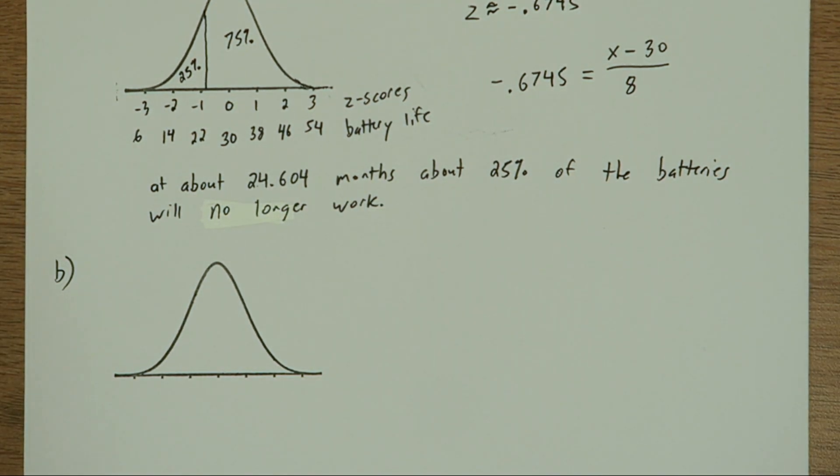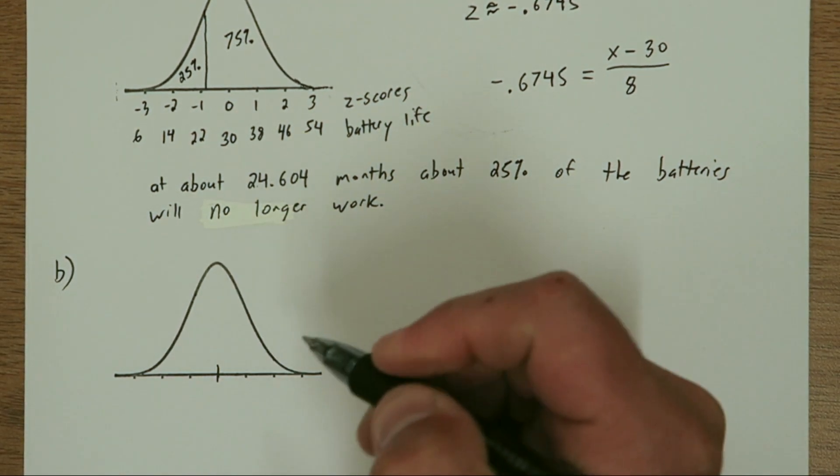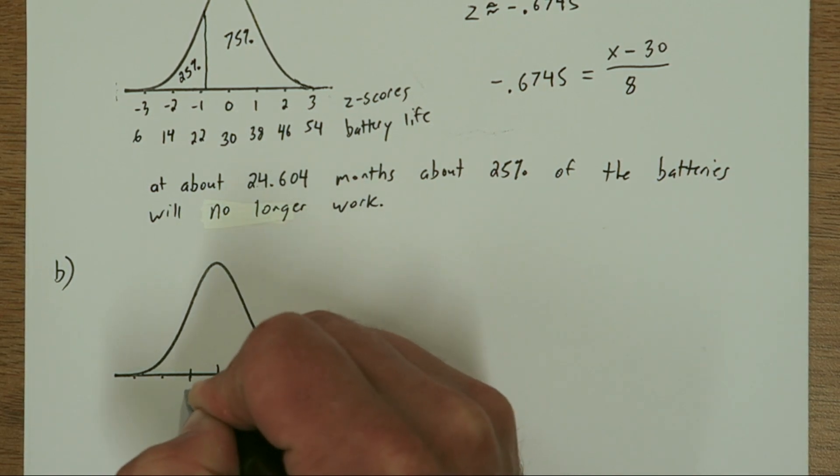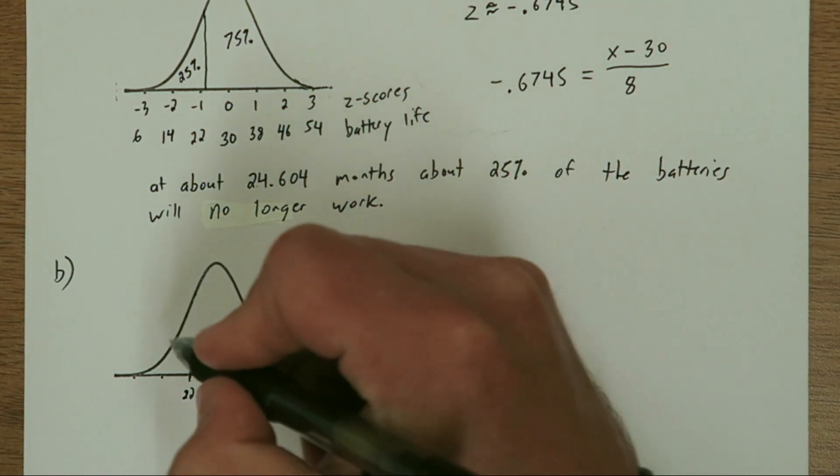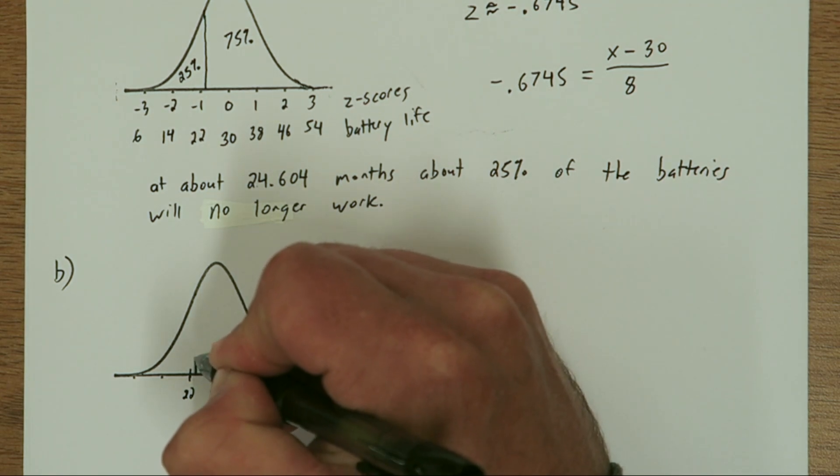So here's another normal distribution and the mean is 30. Here's 22. So a cutoff of 24, let's say that's right about here.